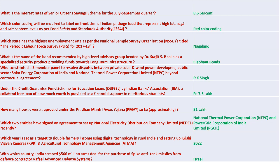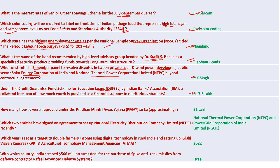8.6% will be the Senior Citizen Saving Scheme rate for the July-September quarter. Red color coding as per FSS indicates food with high fat, high sugar, and salt content. Nagaland had the highest unemployment rate as per the NSSO Periodic Labour Survey 2017-18. RK Singh constituted a three-member panel to develop a mechanism to resolve disputes between private solar/wind power developers and NTPC. 7.5 lakh is the credit guarantee fund scheme for educational loans by IBA, given to meritorious students.